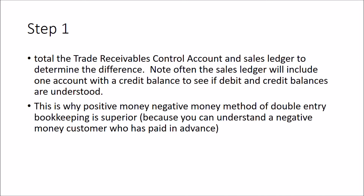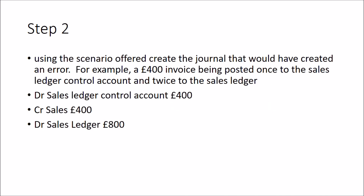Often, if we're given the sales ledger accounts, we'll need to add them up to create the balance in the sales ledger. They'll typically include one account with a credit balance to test whether debits and credits are understood - because it's possible for a customer to have a credit balance if they've paid in advance, received a credit note, or overpaid. That's a negative money position, which is why the positive/negative money method of double entry bookkeeping is useful.